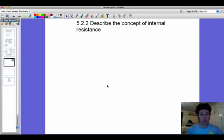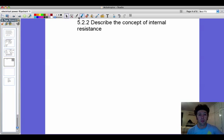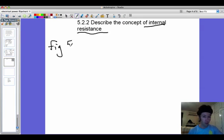Since we're making good progress we'll keep going and we will describe this concept of internal resistance which is usually a bad thing within batteries. And let's call this figure 5.7.